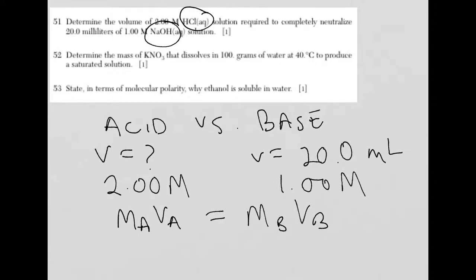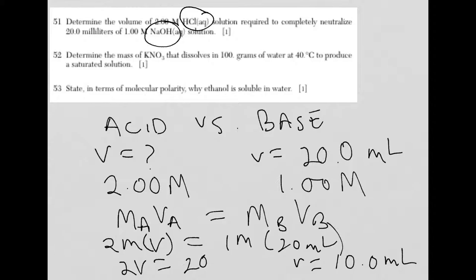Now I just have to plug it in. So I have 2 molar. I'm looking for V. On this side, I have 1 molar and 20 mils. So 1 times 20 is 20. That's equal to 2V. We divide both sides by 2. The volume then has to be 10.0 milliliters. So the answer for question 51 is 10.0 milliliters.